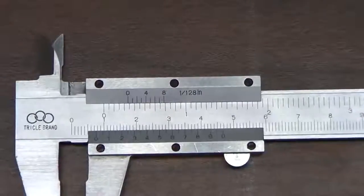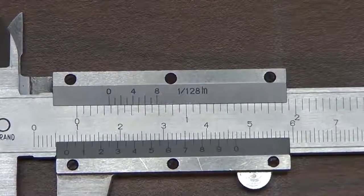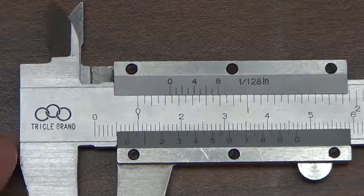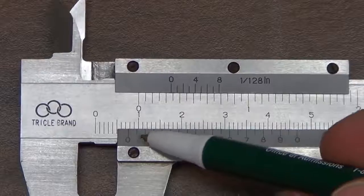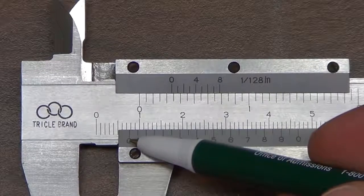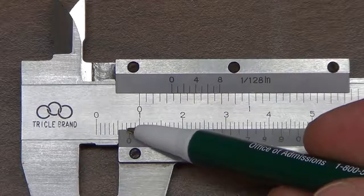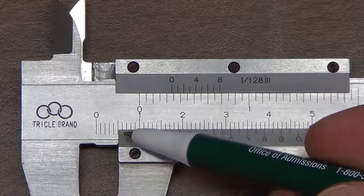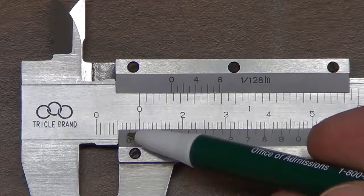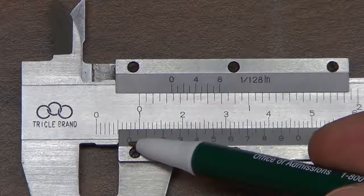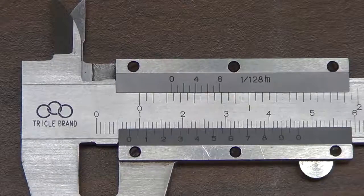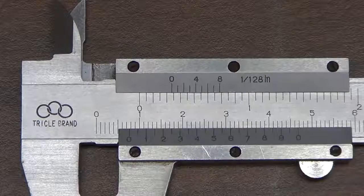On the major scale it's the question of where does the 0 on the minor scale line up with the major scale. So here we have a 0 on the minor scale which is a little past this hash mark here. So that's 5, 6, 7. It's a little more than 0.7 centimeters. The question is how much more than 0.7 centimeters is it?